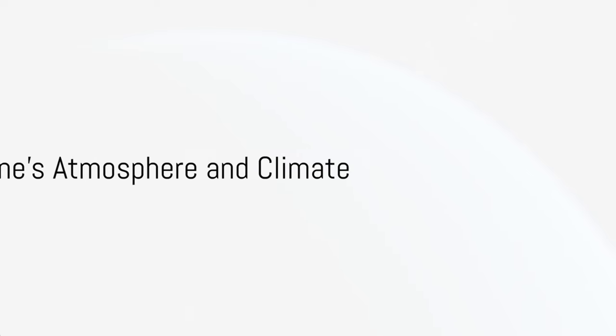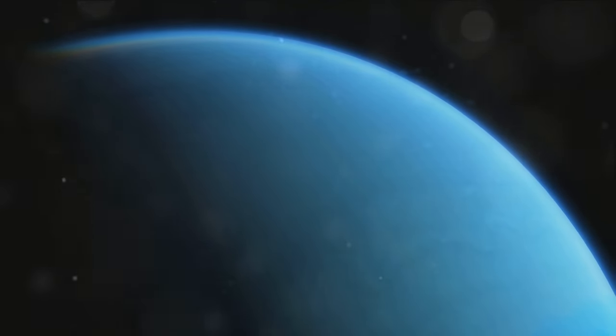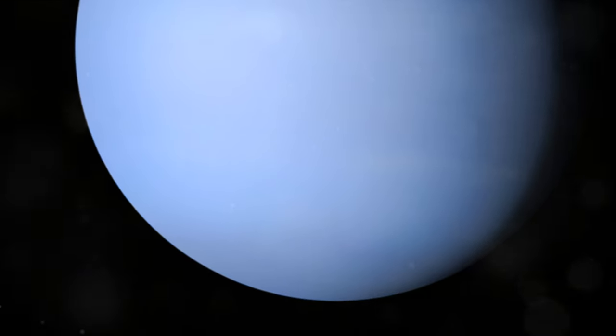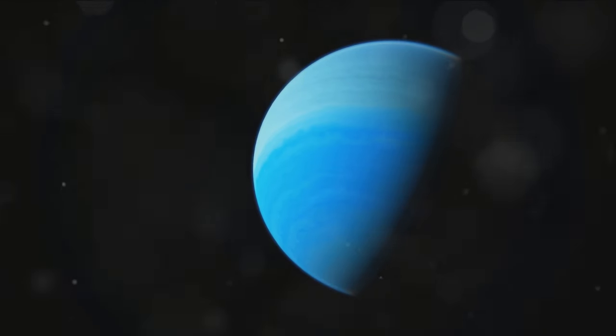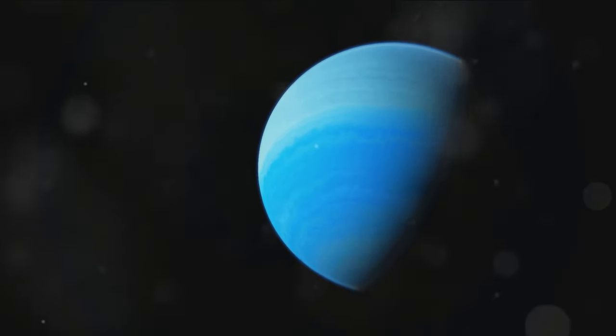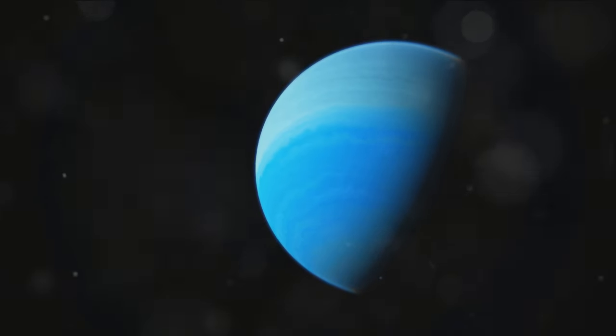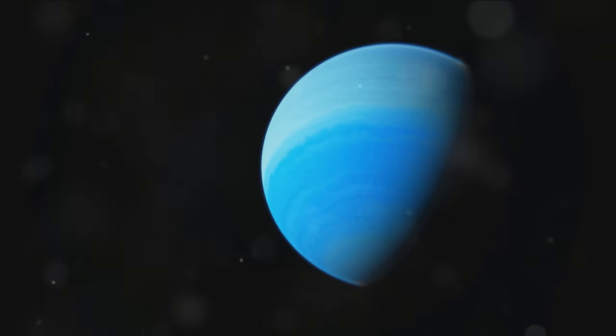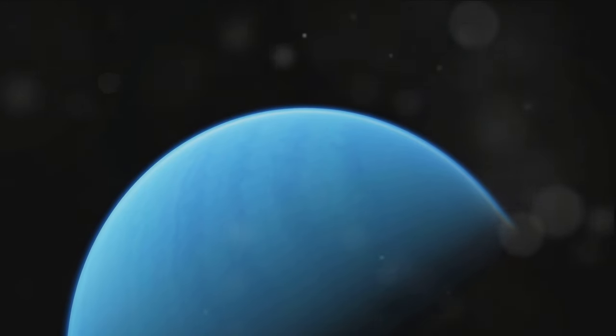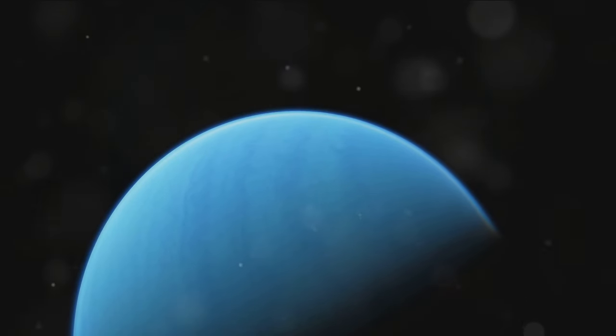Neptune's enchanting blue color is a result of its unique atmosphere. Now let's dive into the science behind this mesmerizing azure hue. Neptune's atmosphere is primarily composed of three elements: hydrogen, helium, and methane. The most abundant of these are hydrogen and helium, which make up a whopping majority of the atmosphere. However, it's the methane in lower quantities that's the real game-changer here.